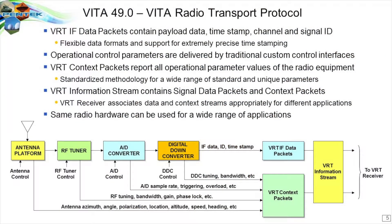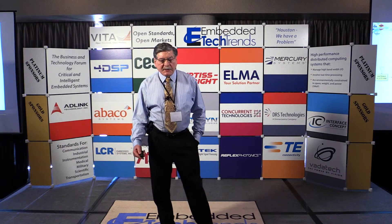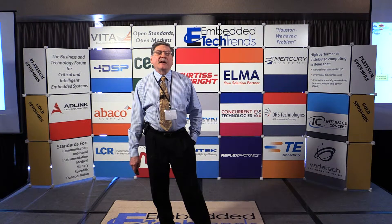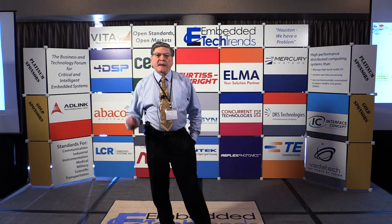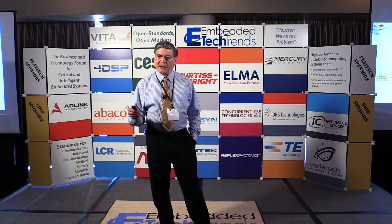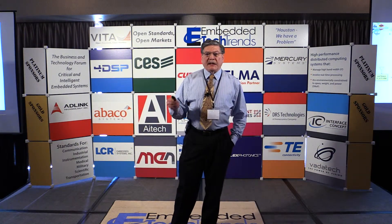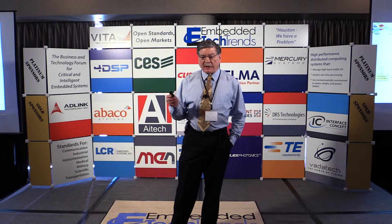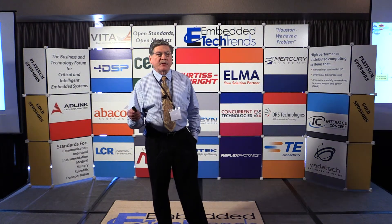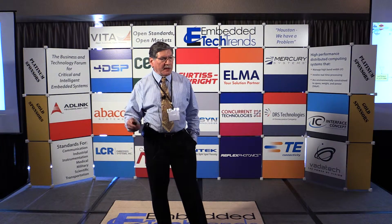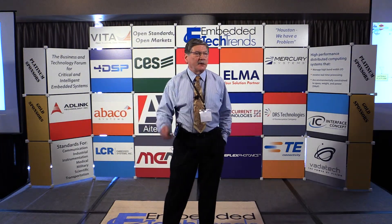Vita 49.0 was the first standard, adopted in 2007. You have a typical radio receiver system with the typical blocks — the antenna, the down converter, A-to-D converters, and digital down converter. With the VRT spec, you now have a standard way of delivering the sampled IF data from the digital down converter across a link that contains precise timestamp information about exactly when the signal was acquired. That's really important for time-of-arrival applications, beamforming, and SIGINT where you need to know exactly when the signal occurred.